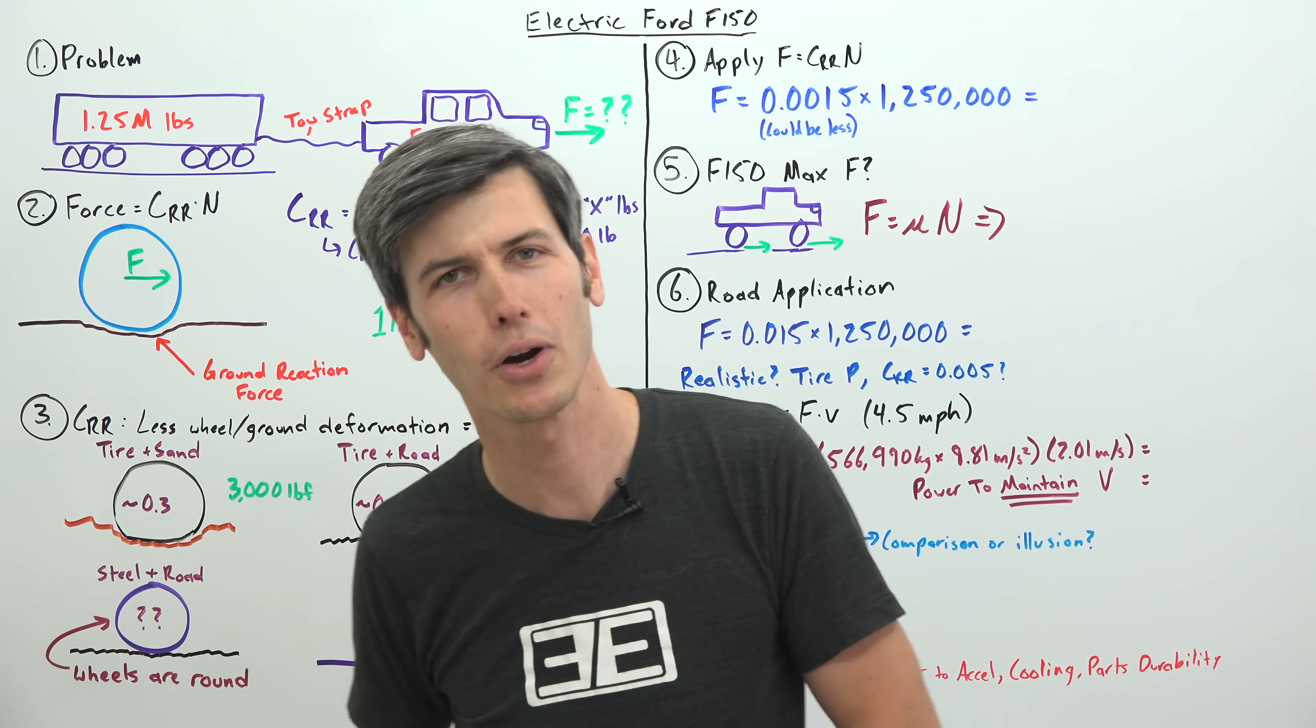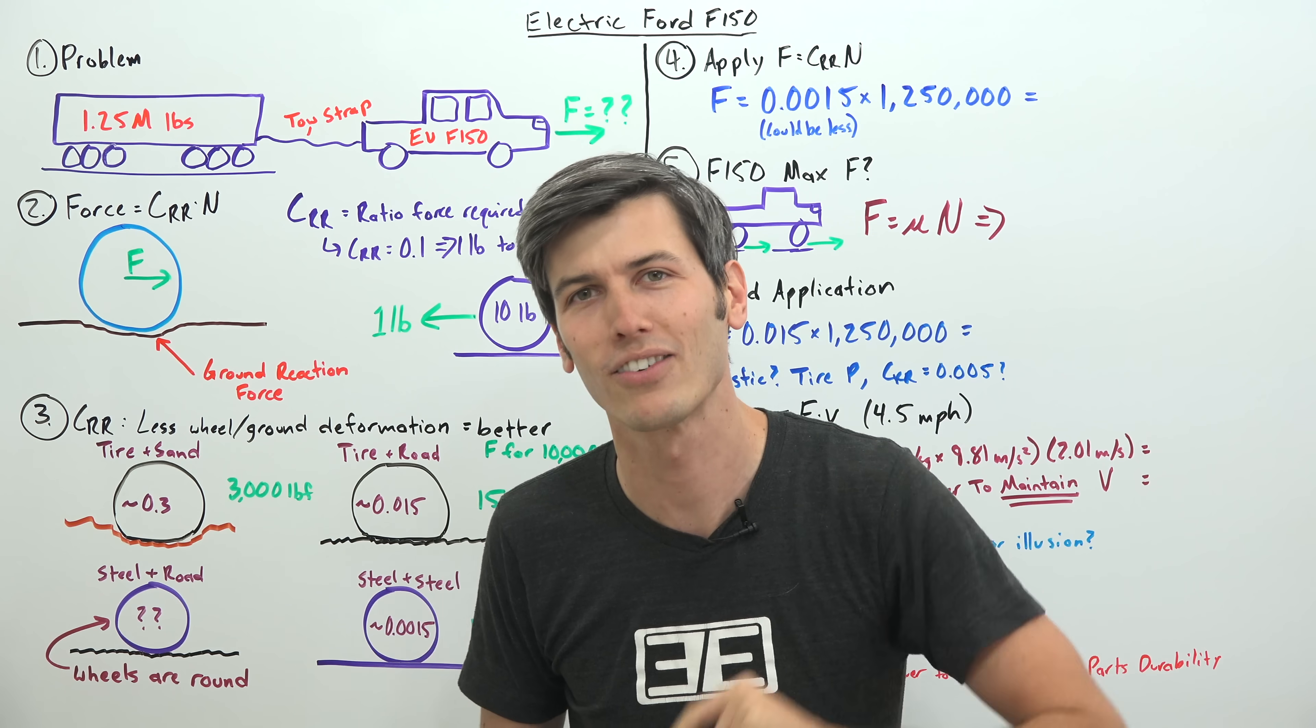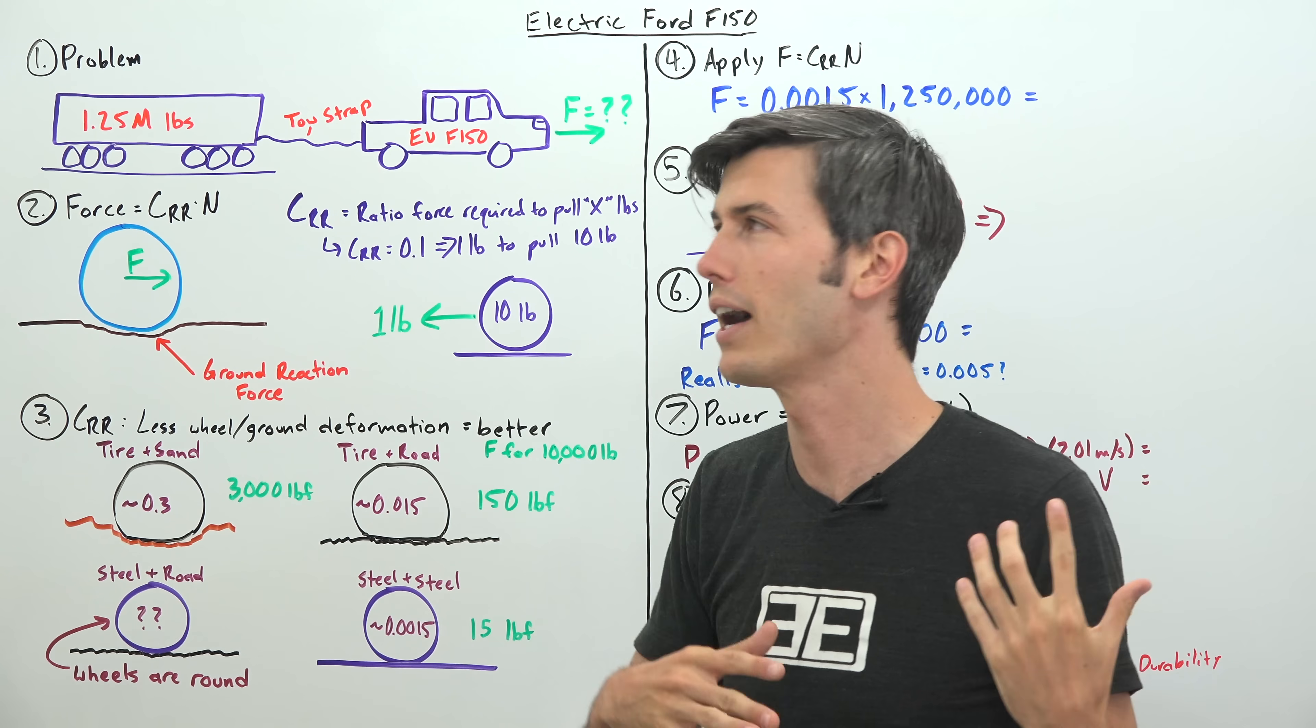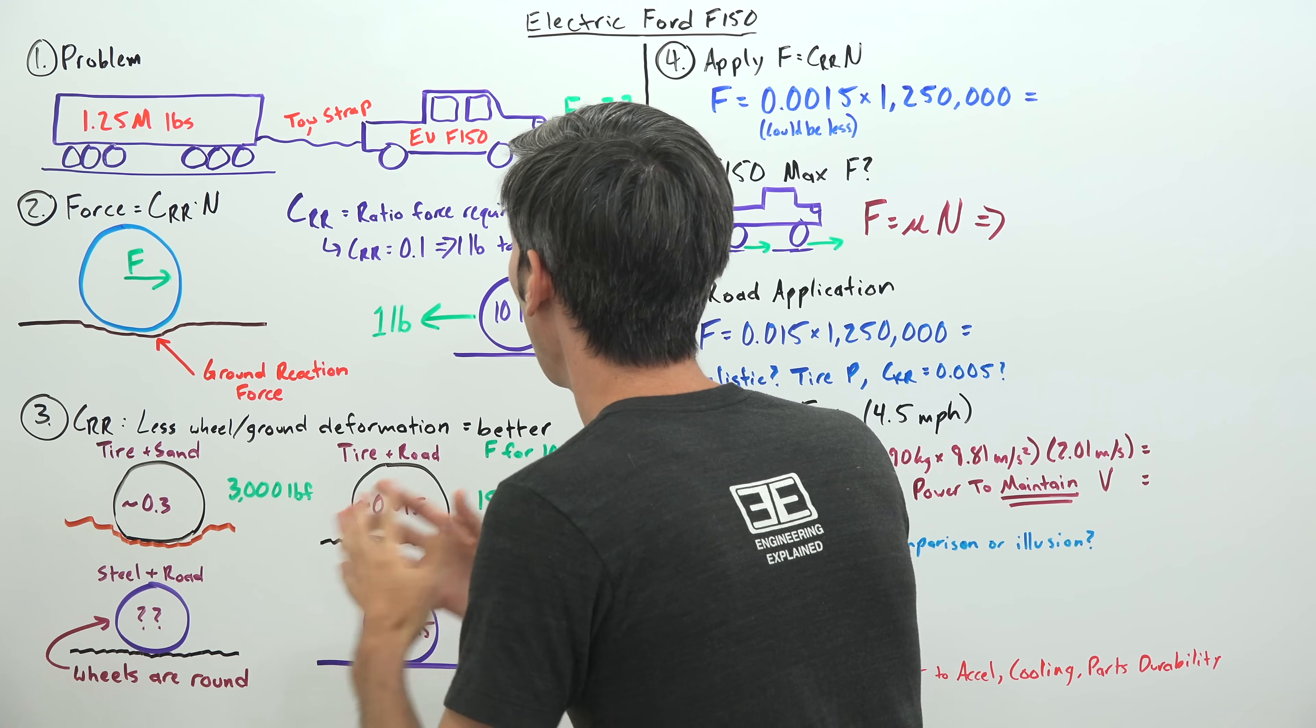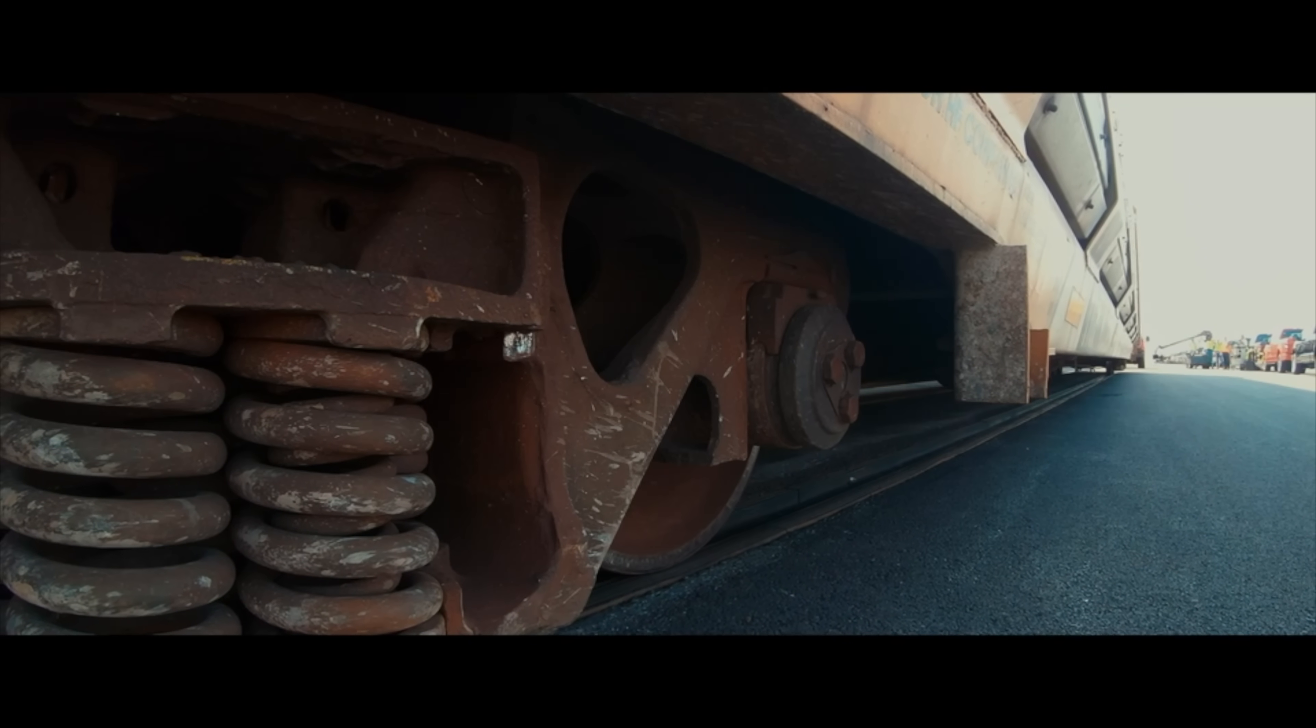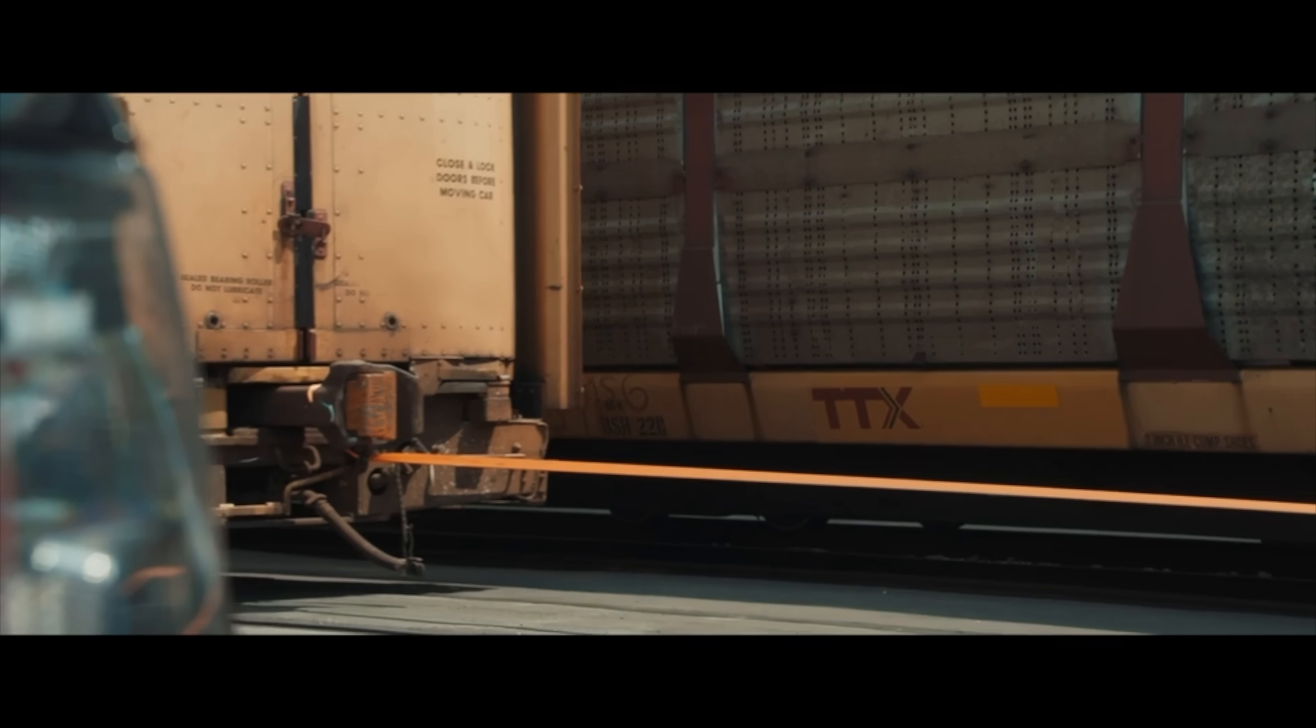And I believe the same thing is going on here with Ford towing this 1.25 million pounds. Once I explain how it all works, you'll probably be like, okay, it's not that cool. It was very cool and a clever idea by Ford, but I want to explain the science behind it. We're going to learn why this electric F-150 was capable of pulling 1.25 million pounds on a railway but why I believe it is not capable of doing so on the road.